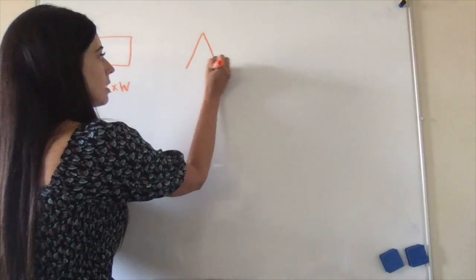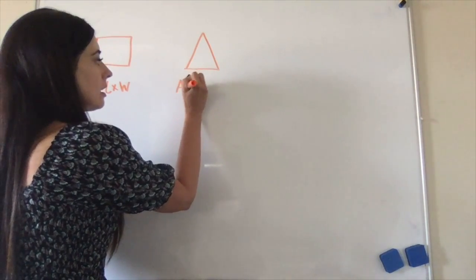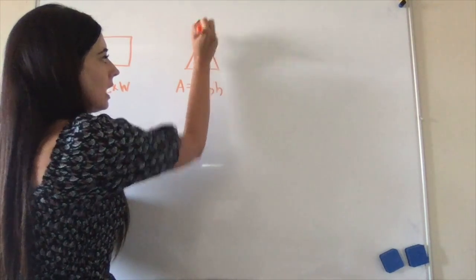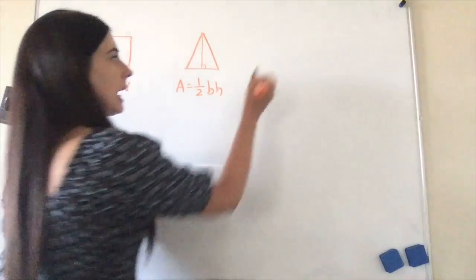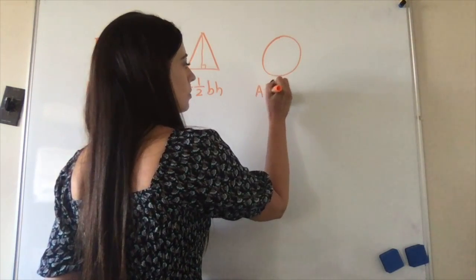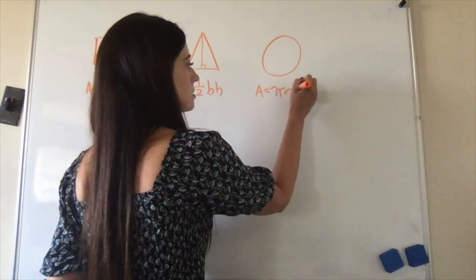If we're talking about a triangle, we know that area equals one-half base times height, height being found at a 90-degree angle. And then the area of a circle, we get A equals pi r squared.